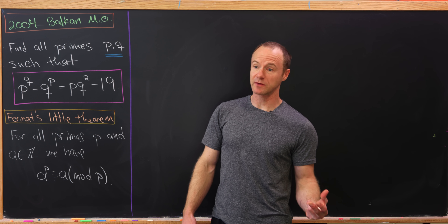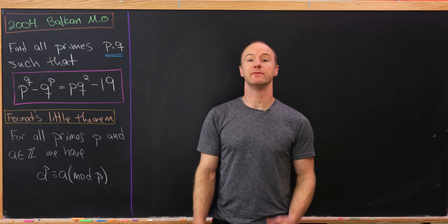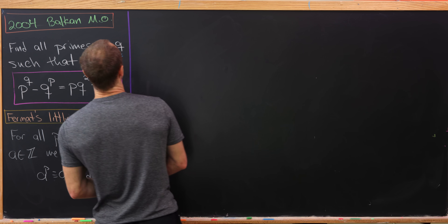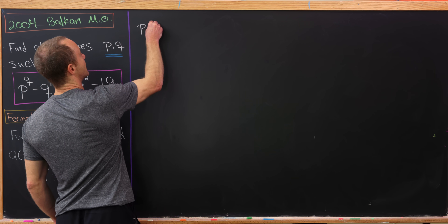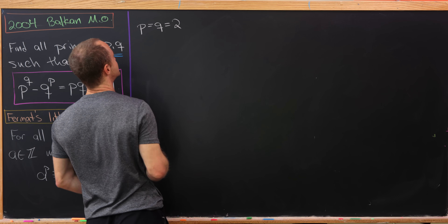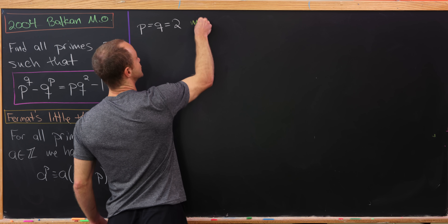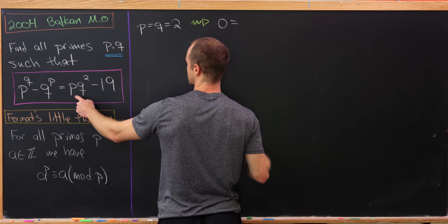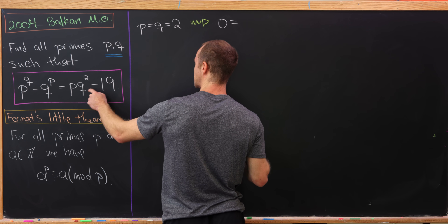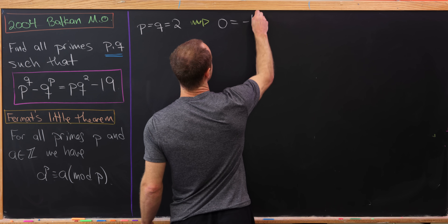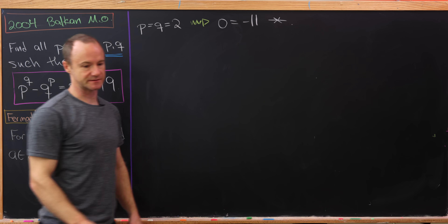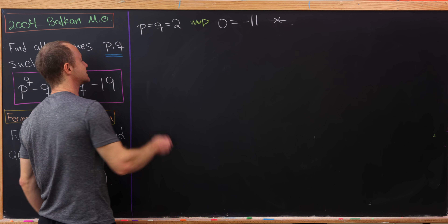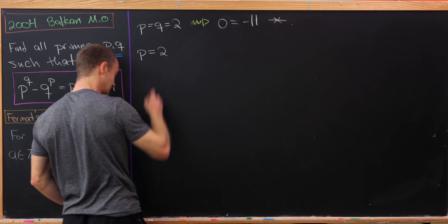We'll start by looking for solutions that include the prime 2, then work towards more general solutions. First, let's look at the possibility that both p and q equal 2. But that collapses the left-hand side to 0, and the right-hand side becomes 8 minus 19, which is negative 11 — a clear contradiction. So it's impossible to have p equals q equals 2. Now let's look at the case p equals 2.